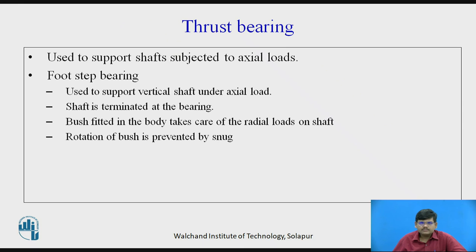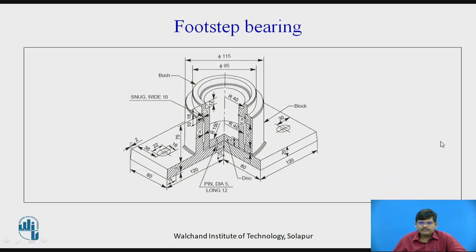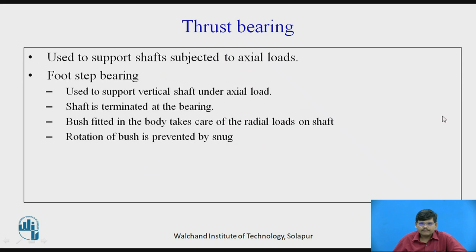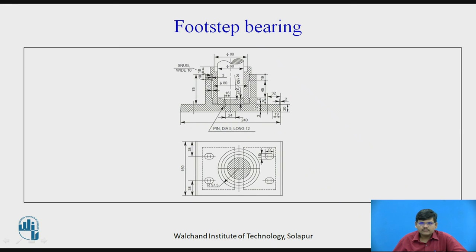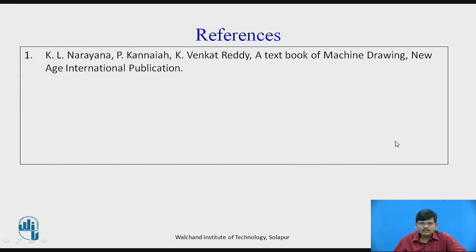Moving on to thrust bearings. Thrust bearings are used to support shafts subjected to axial loads. The footstep bearing is used to support a vertical shaft under axial load — the shaft is terminated in the bearing, with the shaft end fitting into it. A bush fitted in the body takes care of the radial load, and rotation of the bush is prevented by a snug, while flanges prevent axial movement of the bushes. The front view and top view of the footstep bearing are shown on screen.